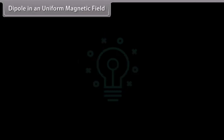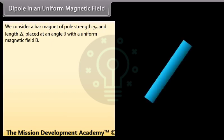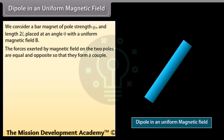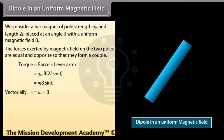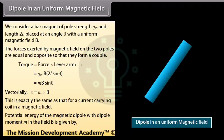Dipole in a uniform magnetic field: We consider a bar magnet of pole strength Qm and length 2L placed at an angle theta with a uniform magnetic field B. The forces exerted by the magnetic field on the two poles are equal and opposite, so they form a couple. Torque equals force times lever arm. Putting the values in the equation, we get torque τ = MB sin θ. Vectorially, τ = M × B. This is exactly the same as that of a current-carrying coil in a magnetic field. The potential energy of the magnetic dipole with dipole moment M in field B is given by U = −M · B.